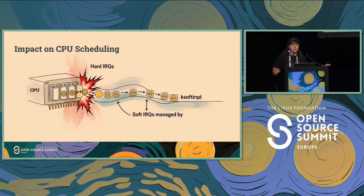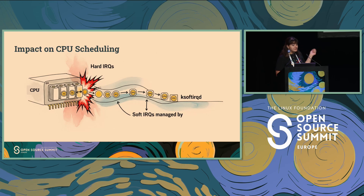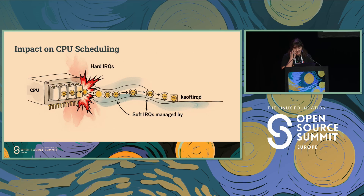How do these interrupts affect which code gets to run on the CPU? It's the impact on scheduling. Hard IRQs are like thieves — they aren't scheduled by the OS. They simply interrupt the system and steal the CPU from whatever application was running. Soft IRQs are a bit more organized. When the system is under load, the kernel has a special thread for them, but this thread also has higher priority, so it too is stealing CPU from other tasks. You can actually see this thread when you run the top command on your machine.